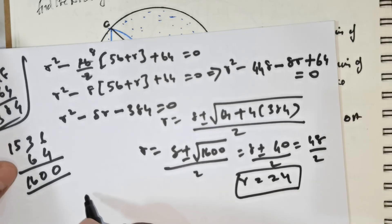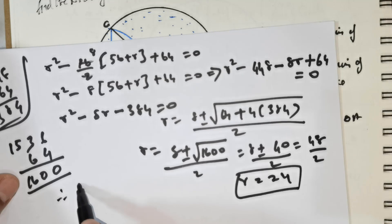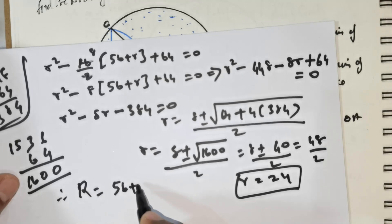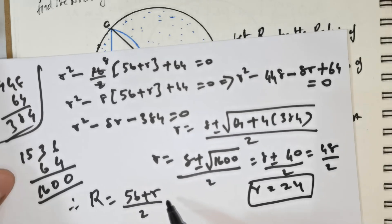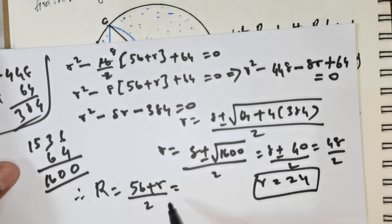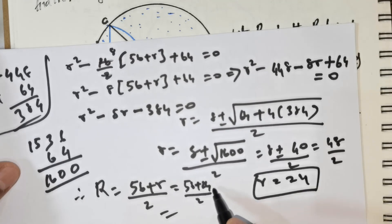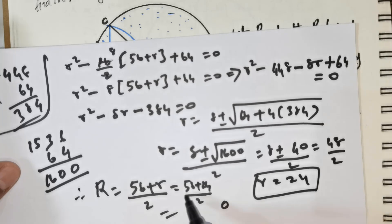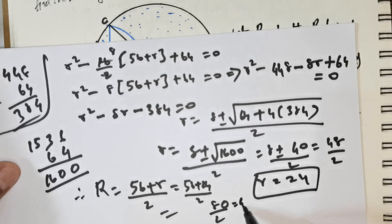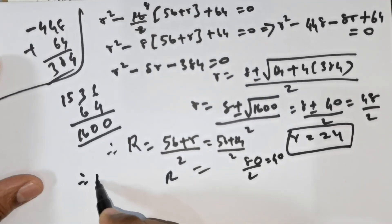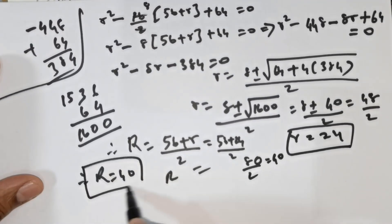So if r is equal to 24, what is my capital R? Therefore, capital R is nothing but (56 plus r) divided by 2, which is equal to (56 plus 24) divided by 2, which is 80 divided by 2, which is equal to 40. So capital R is equal to 40 units.